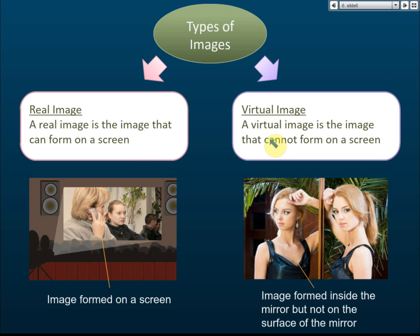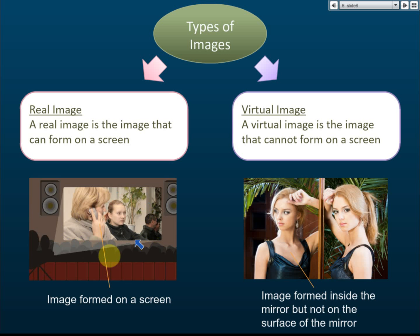You must memorize the definitions. A real image is the image that can form on a screen. Note that a screen can be anything — a wall, a cinema screen, a whiteboard, or a blackboard. It does not have to be a cinema screen specifically. That covers the two types of images.